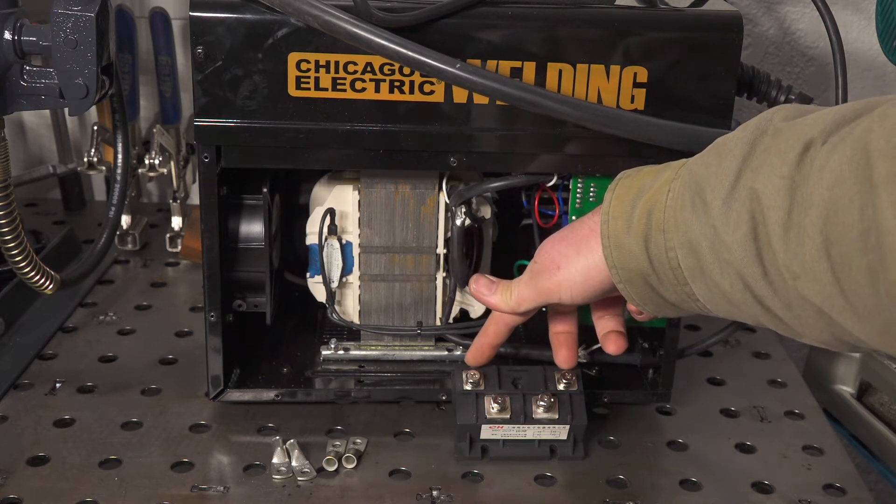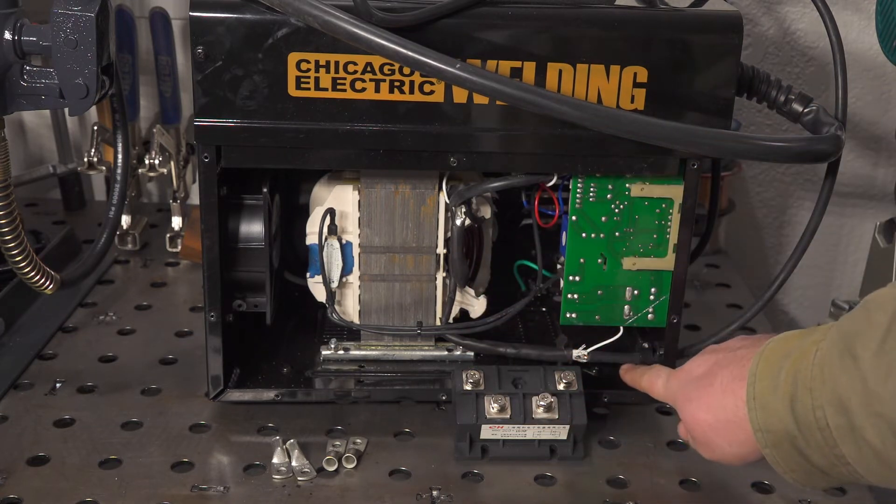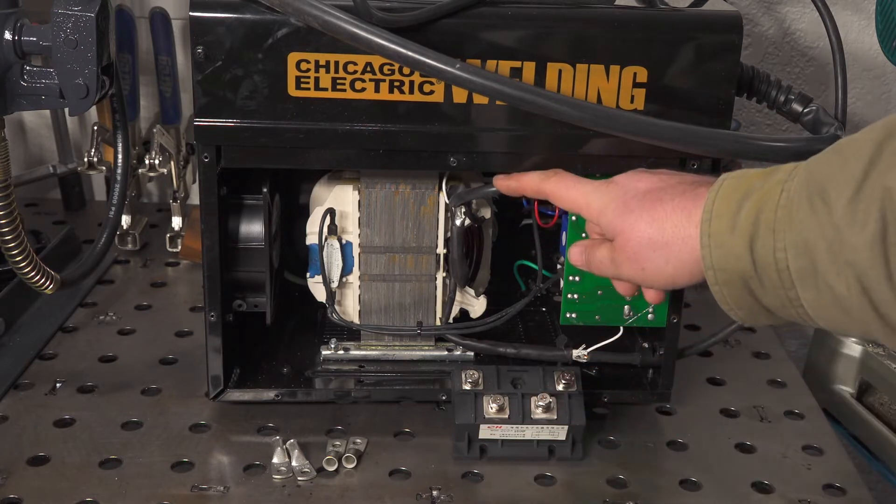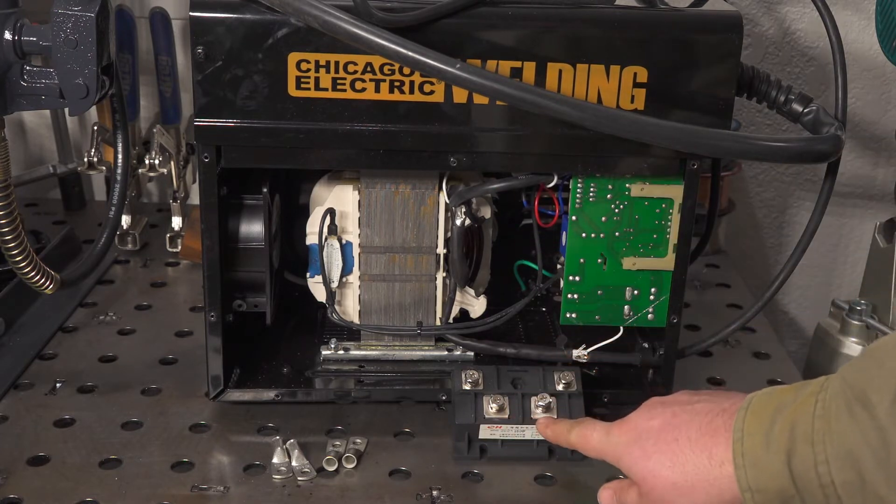Hook the two outputs from the transformer to the AC side of the rectifier and then hook the work clamp to the positive side of the rectifier and the wire feed side to the negative terminal of the rectifier.